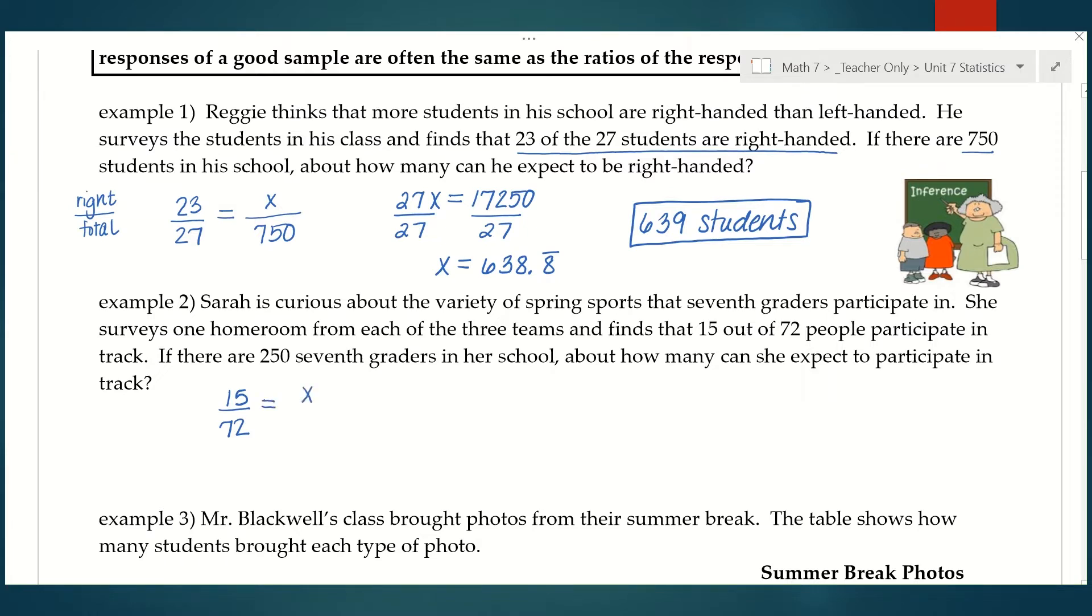I want to know how many out of the 250 seventh graders would we expect to participate in track. So there's our proportion part over whole. We're going to cross multiply. 72 times x is 72x. 15 times 250 is 3,750. I'm going to solve the equation by dividing by 72, which gives me 52.083 repeating. We can't have a fraction of a person, so we're going to round this normally, which would give us 52 students.